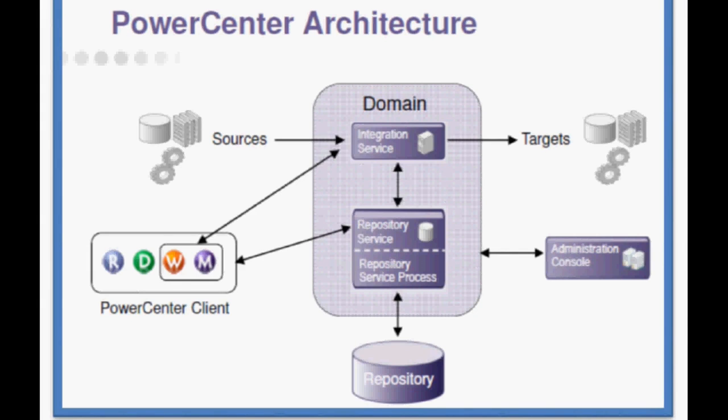Today we are going to see Informatica PowerCenter architecture. Informatica is a service-oriented architecture based on services. There are two main services: Integration Service and Repository Service. Multiple services are available and can be configured according to our needs depending on the number of licenses, but these two services are mandatory to load any kind of source to any kind of target.